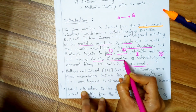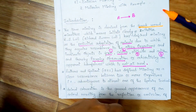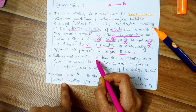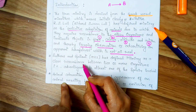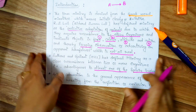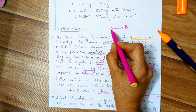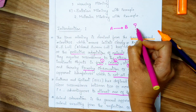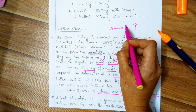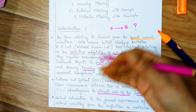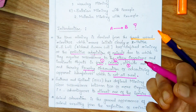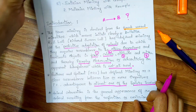Galatson in 1973 defined mimicry as a close resemblance between two or more organisms that is advantageous to at least one of those species involved. Animal A mimics animal B because it gains an advantage — it helps to escape from the predator or helps to catch prey.